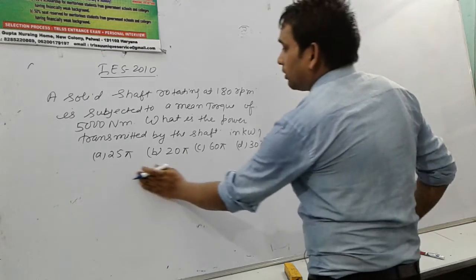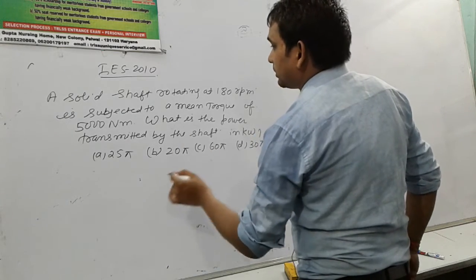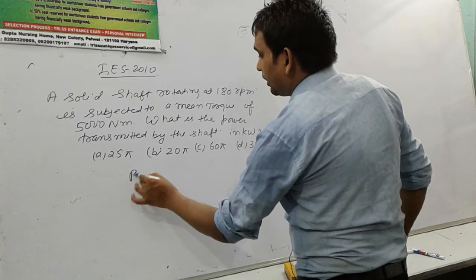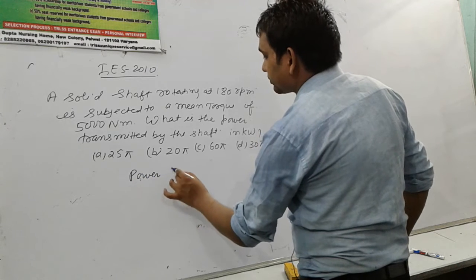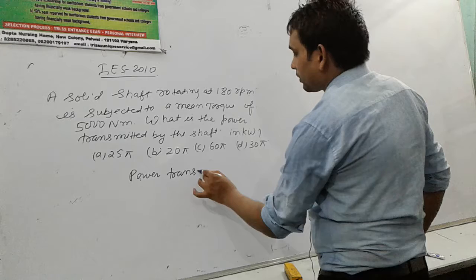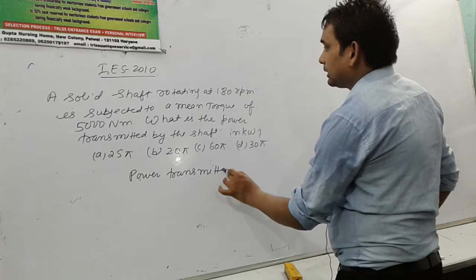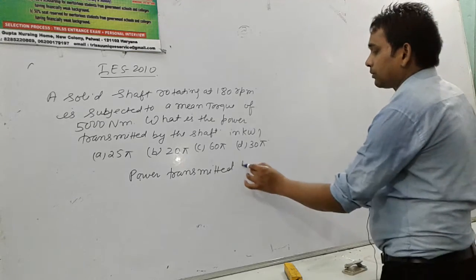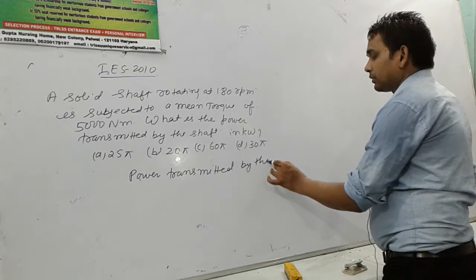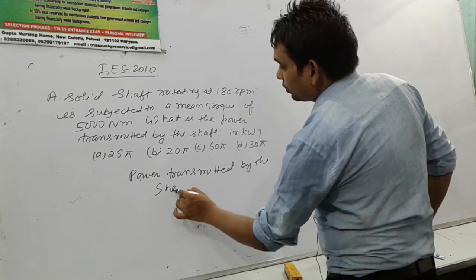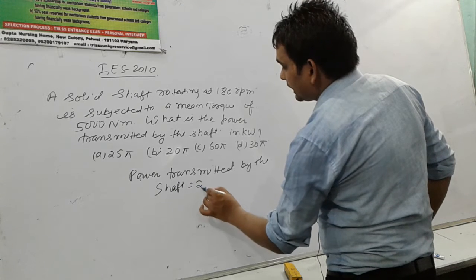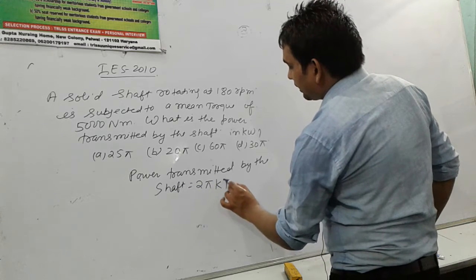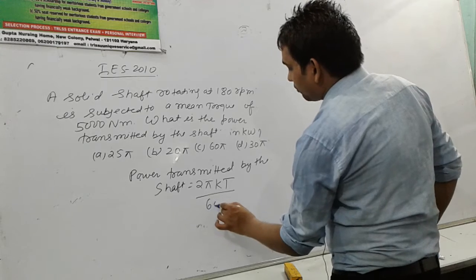We know the formula of power transmitted by this shaft. The formula is 2πNT divided by 60 Watt.